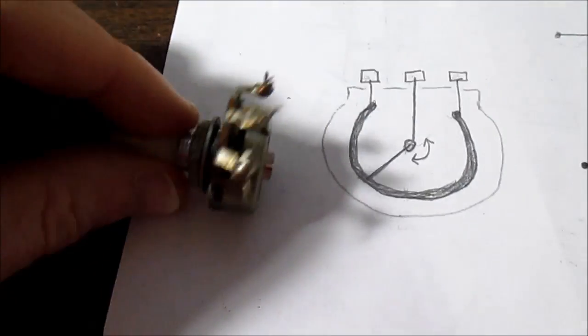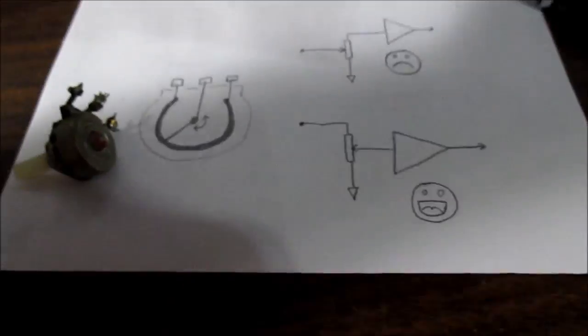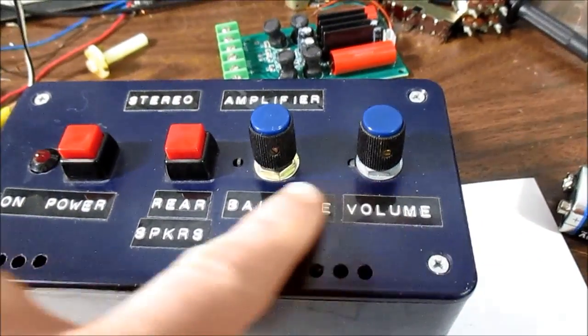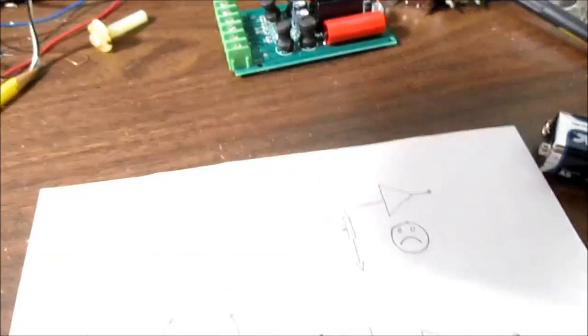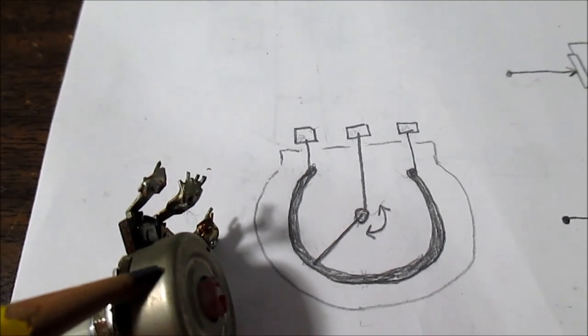And one last tidbit I will leave you with: if you build your amplifier in a plastic case or has a non-conductive panel where the volume control is mounted, make sure you take the ground wire and solder it to the case.